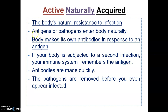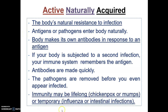The pathogens are removed from the body before a person even appears infected or develops the symptoms of the disease. Some examples of active naturally acquired immunity are chicken pox or mumps, and this immunity may be lifelong, or it can be temporary in the form of a flu, which you can become immune to as a result of your body's active naturally acquired immunity.